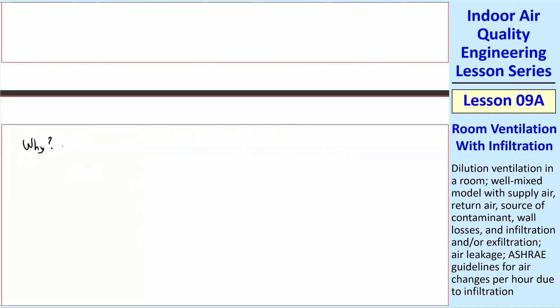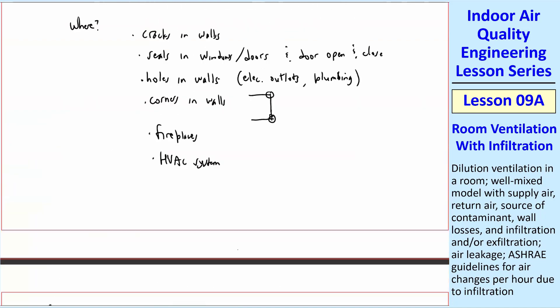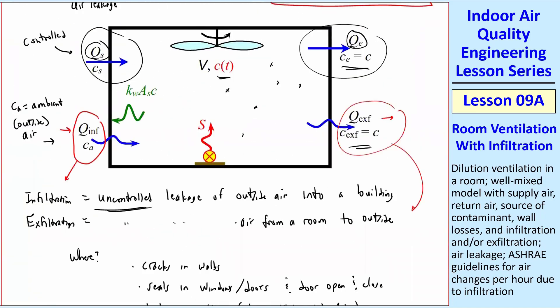Why is there infiltration and exfiltration? The simple answer is there's a pressure difference, delta P, between inside and outside. Delta P is P outside minus P inside. If delta P is positive, in other words, the outside is bigger than the inside, you're going to have infiltration. You have a high pressure outside and you have a low pressure inside. Air is going to seep through those cracks in the walls and come in.